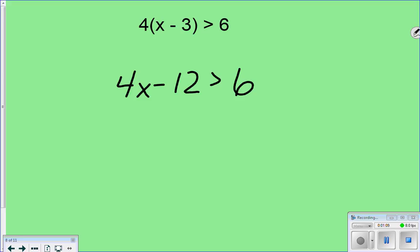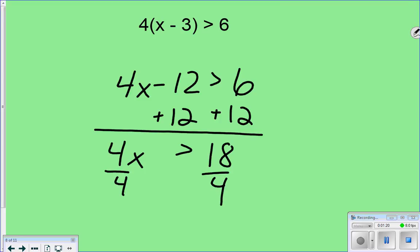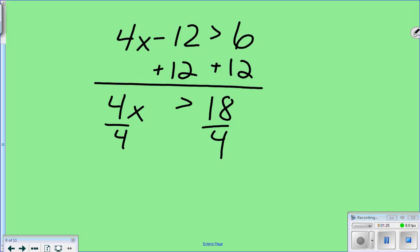Let's add 12, add 12. I have 4x is greater than 18, divided by 4, divided by 4. You could even keep it as a fraction if you wanted to. If you want to keep it as a fraction, that's okay. So it would be x is greater than 4 and a half.